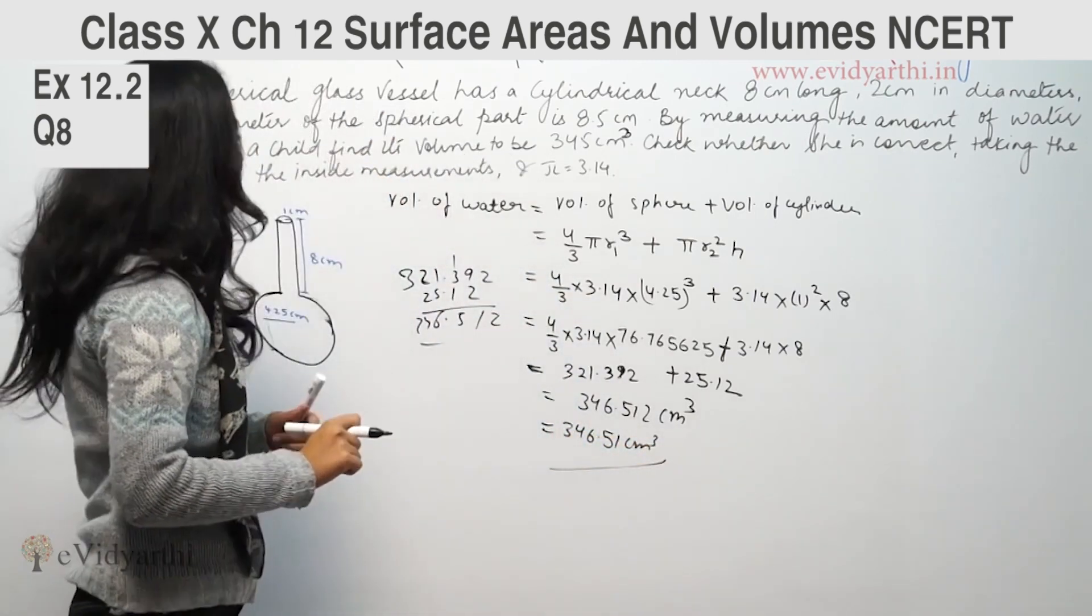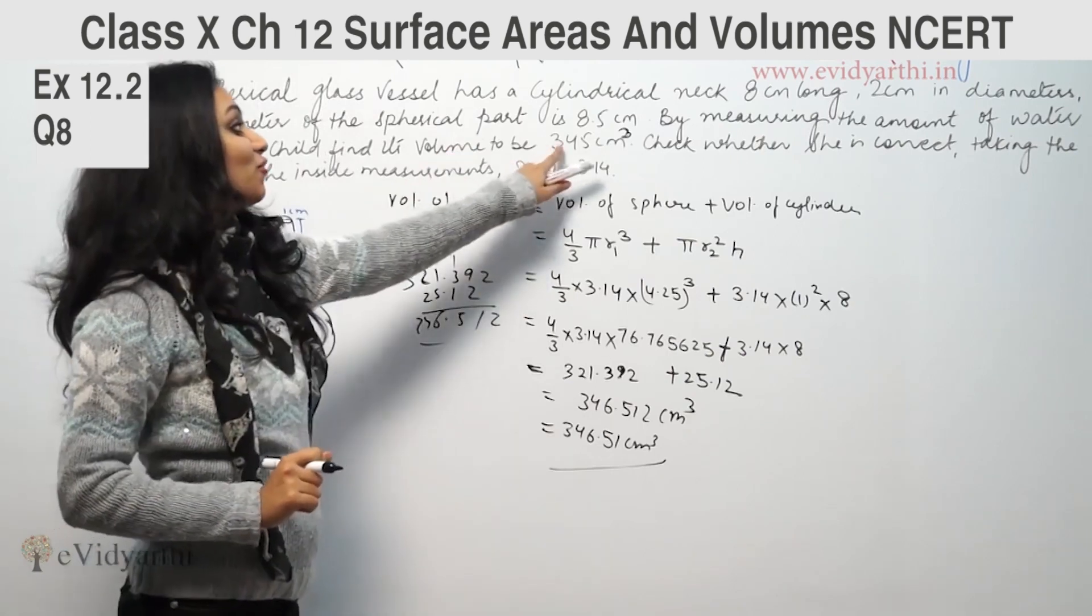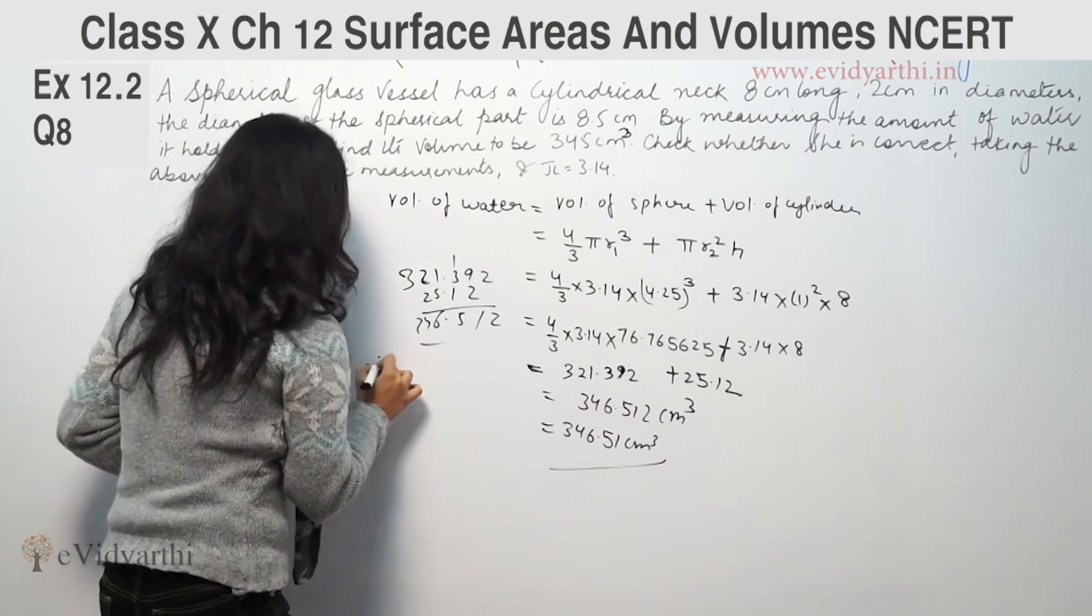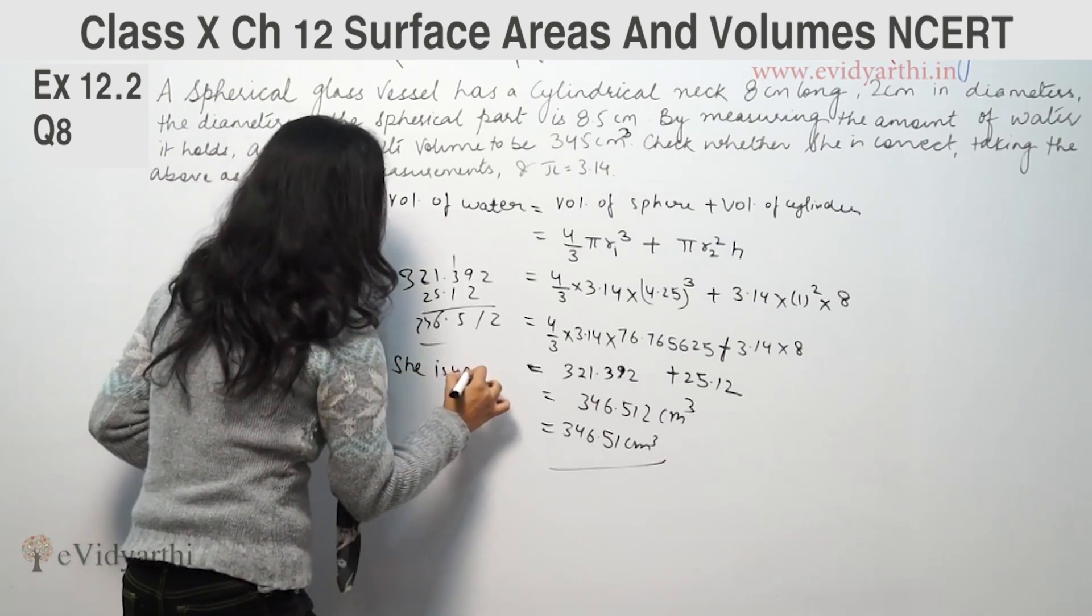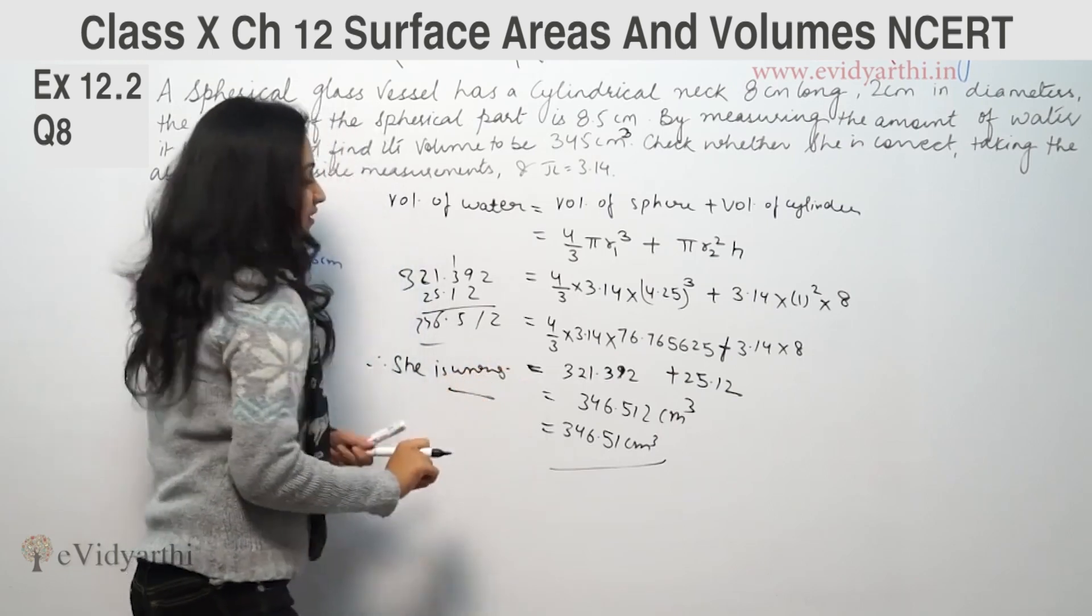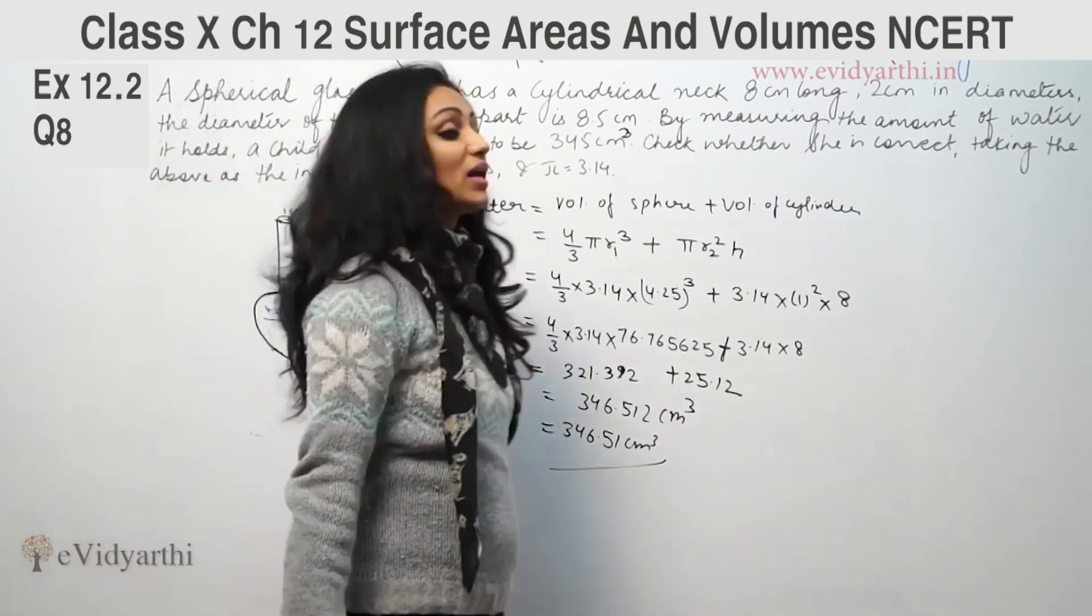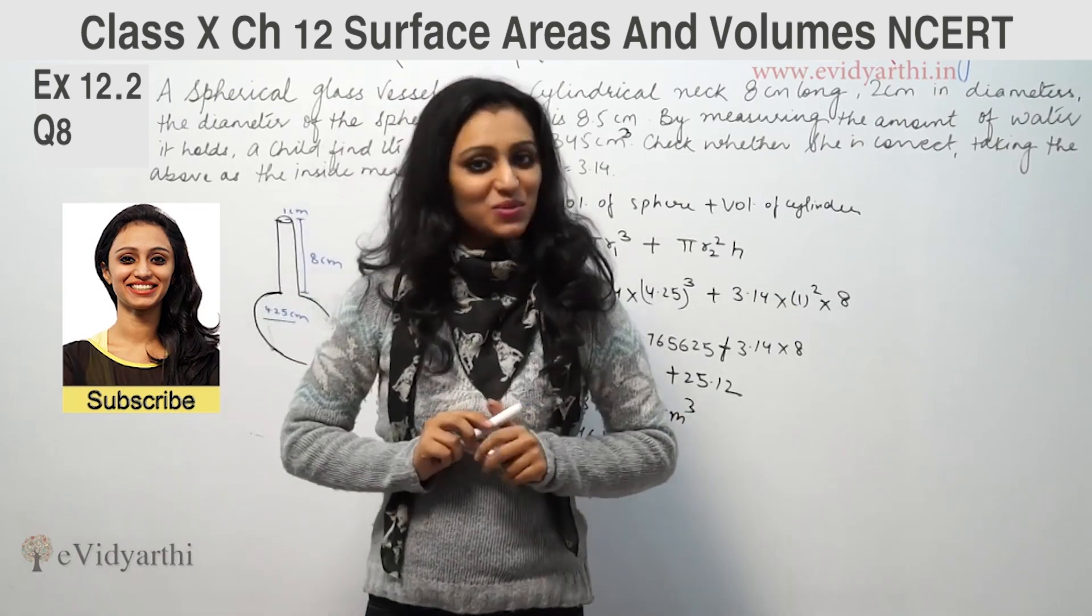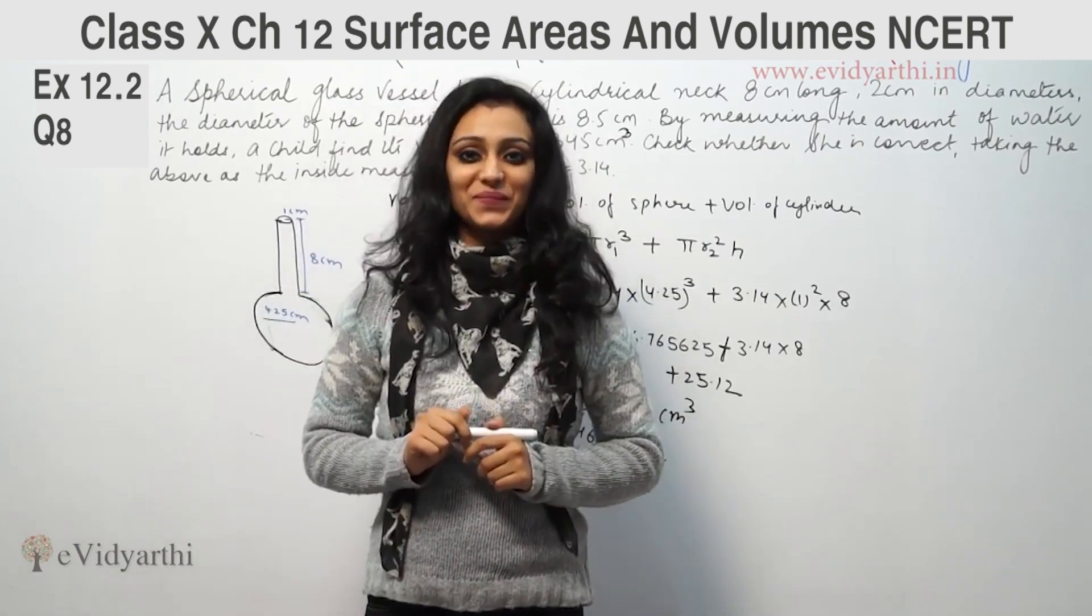So this is the volume. The child calculated the volume as 345 cm³. The child's volume is not correct, therefore she is wrong. So this was the 8th question from exercise 13.2 and towards the next video for some more questions. Goodbye.